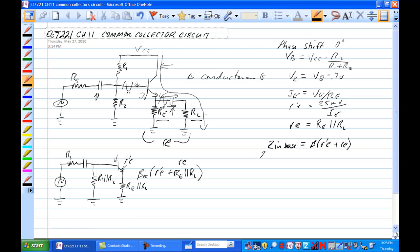Z in stage. Z in stage is looking from this point, Z in base is looking from this point. In this case we have R1 in parallel with R2 in parallel with this quantity beta times R prime E plus RE, and that's Z in stage.